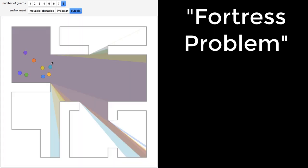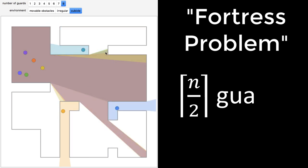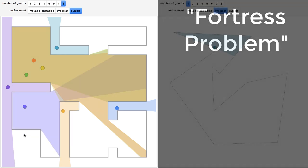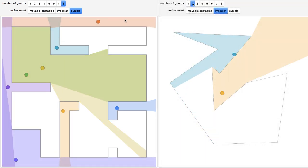For a simple polygon with n vertices, the ceiling of n divided by 2 guards are sometimes necessary and always sufficient. That means you'll probably need more cameras for the outside of your house than the inside.